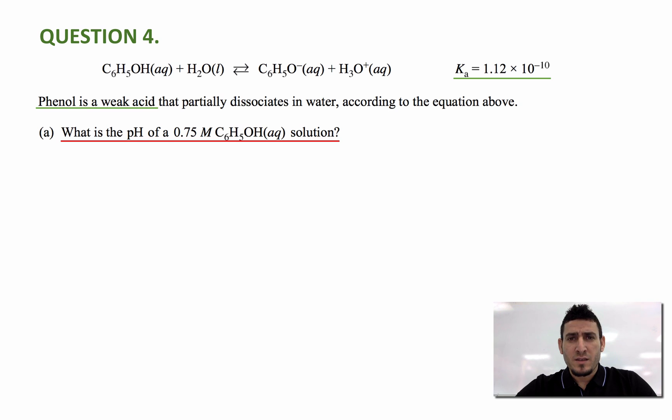First let's write the expression of Ka. Ka equals the concentration of the product divided by concentration of the reactant. So concentration of phenolate multiplied by the concentration of hydronium divided by concentration of phenol. We exclude water because water is at the liquid state.